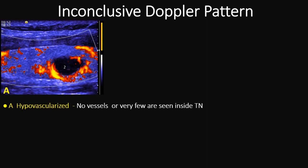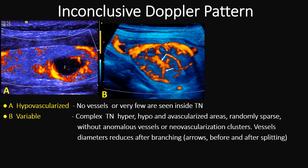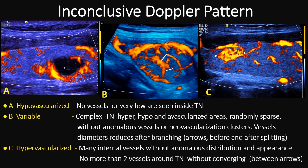We also have three inconclusive Doppler patterns to show. The hypovascularized inconclusive pattern shows no vessels inside the thyroid nodule. The variable inconclusive pattern shows a complex thyroid nodule with hyper-, hypo-, and avascularized areas, randomly sparse, without anomalous vessels or neovascularization clusters, and vessel diameters do not reduce after branching, as shown here. The third example is the hypervascularized inconclusive pattern, with many vessels inside but homogeneously dispersed with normal appearance, and only two vessels around the lesion.